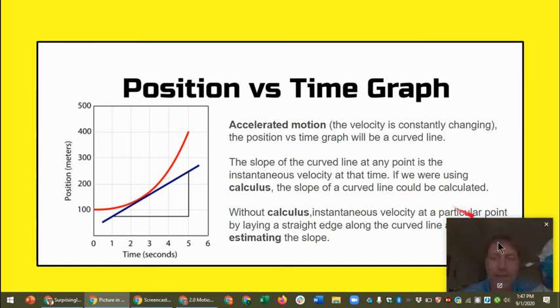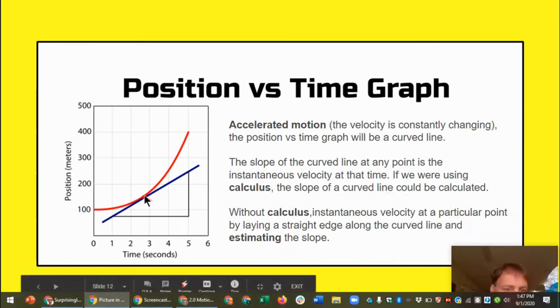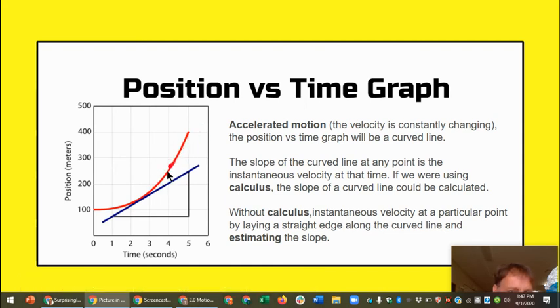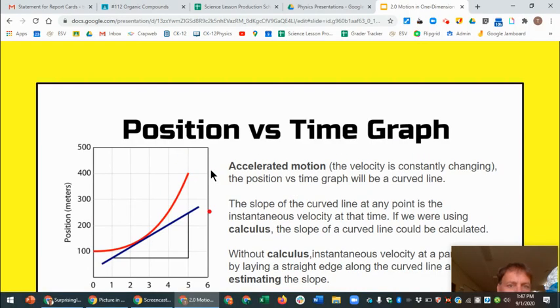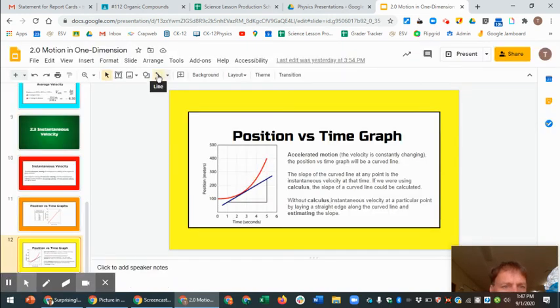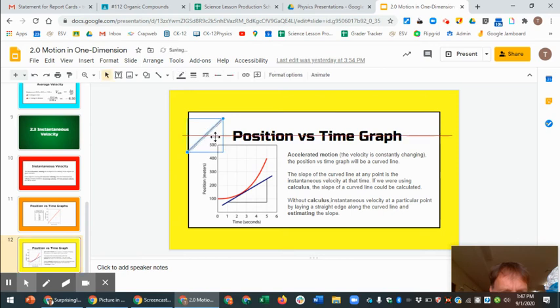What we're going to do is we're going to estimate it using a straight edge. So we would lay a straight edge on here and try to find a estimated point where that line crosses it. So for instance, let me get out of this presentation here and show you what that might look like. So if I take a line right here and I would draw, let me draw a line like this and I would lay this straight edge right along our line, just like that. Maybe orient that a little bit, something like that.